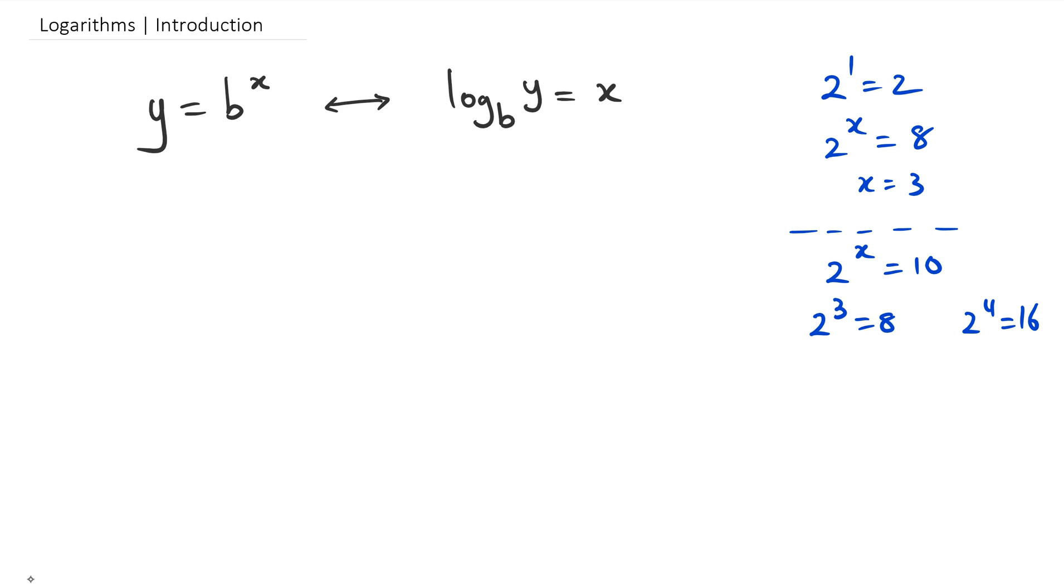The first thing you need to understand is that on the left hand side, this is actually known as the exponent form. It's just written in a normal equation with something raised to the power of something. And on the right hand side is actually called the log form. I will show you how to use the calculator in this case as well.